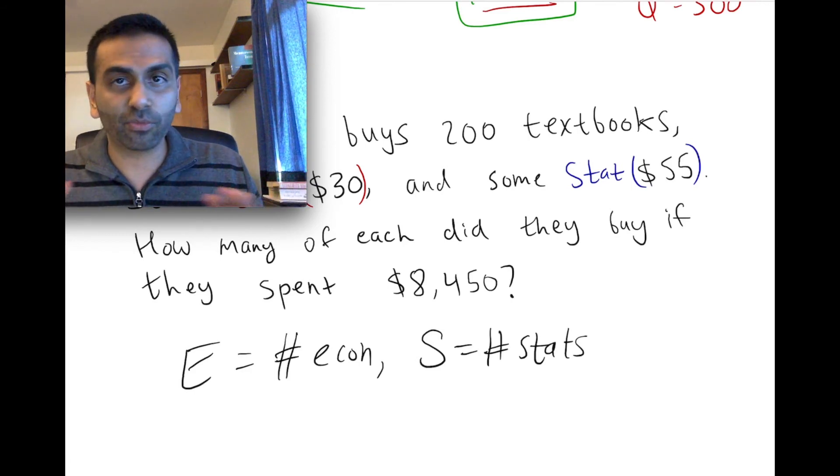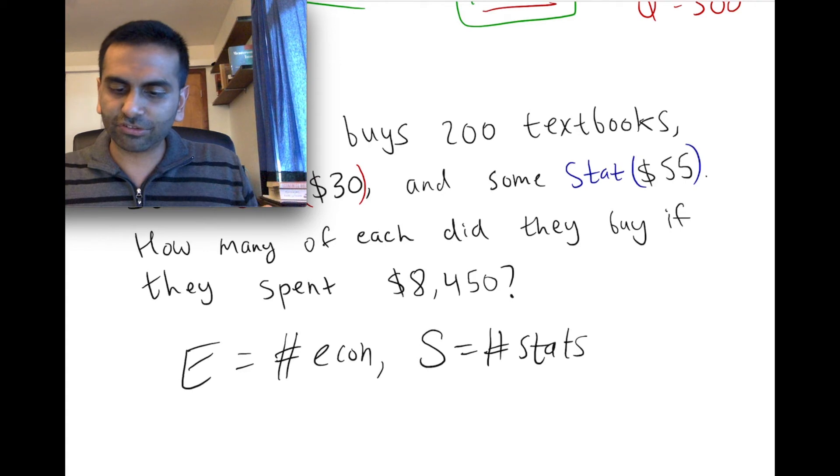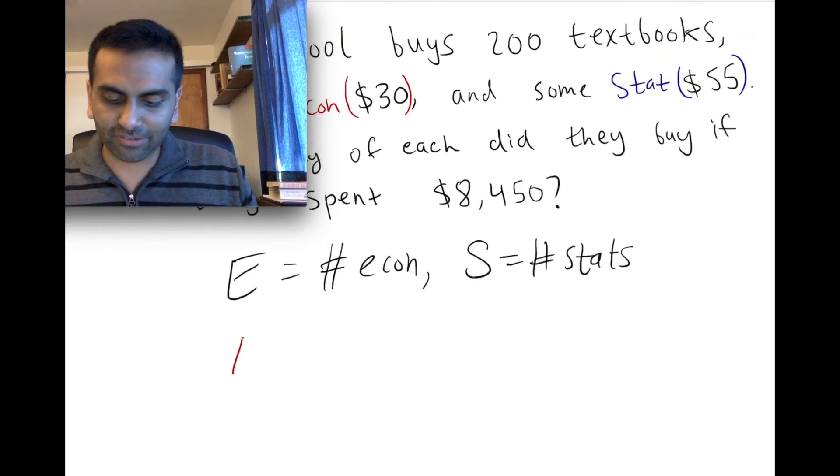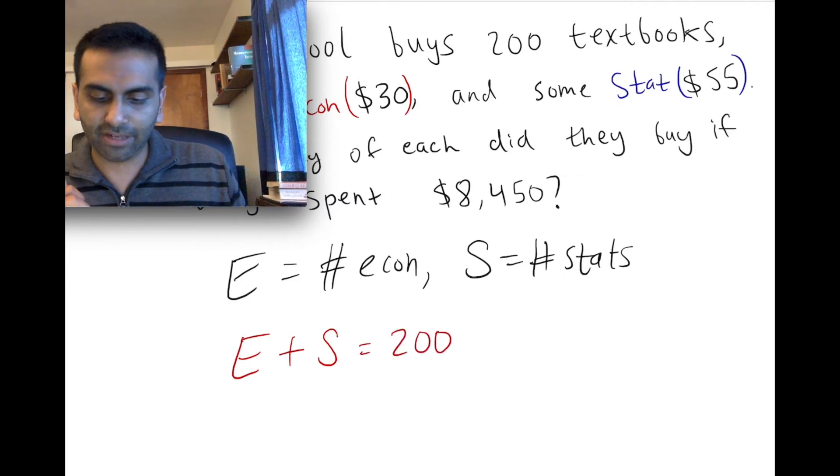So E is the number of econ books that they buy, and S is the number of stats books that they buy. Now, you could call them X and Y if you prefer or A and B. Totally fine. Either way, you should get the same answer. So if you just call them E and S, let's translate. A school buys 200 textbooks. Well, that means however many econ books I bought plus however many stats books I bought has to add up to the number 200. Easy enough.